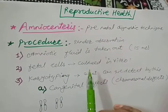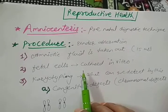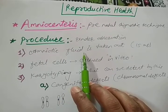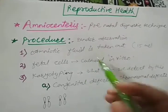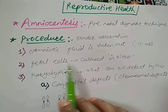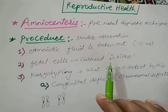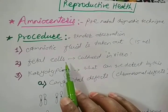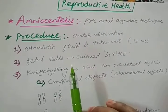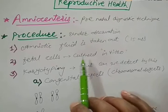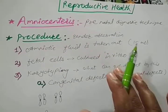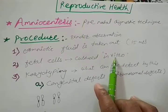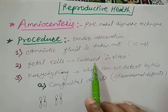That fluid is taken out, and fetal cells are present in that amniotic fluid. These fetal cells are collected — that is the second step: fetal cells are cultured in vitro. In vitro means inside the laboratory, outside the body. From the mother's body, from that amniotic fluid, we have got the prenatal baby's cells, and we culture them by giving the same environment in the laboratory.